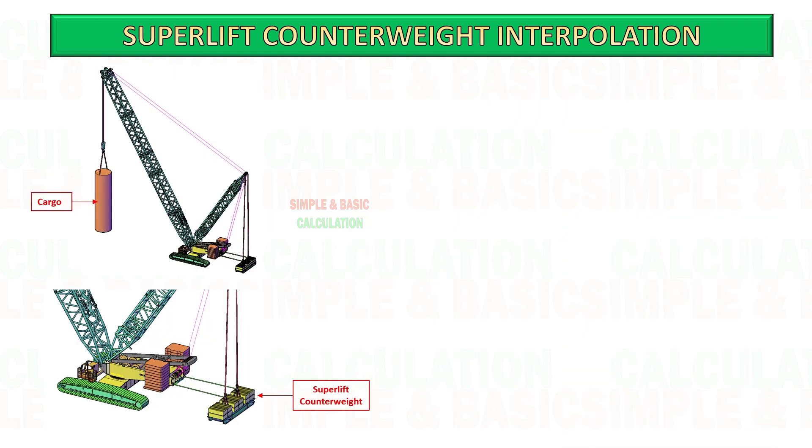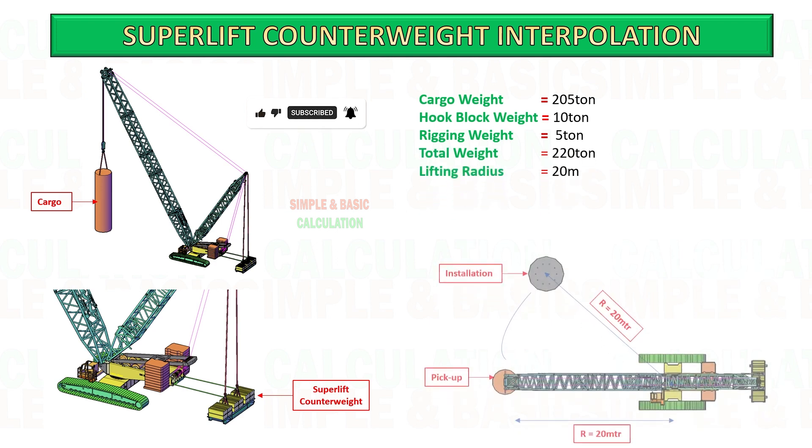Example. You need to lift 205 ton cargo at 20 meter radius, and your hook block weight is 10 ton plus rigging weight is 5 ton. What is the minimum superlift counterweight required?